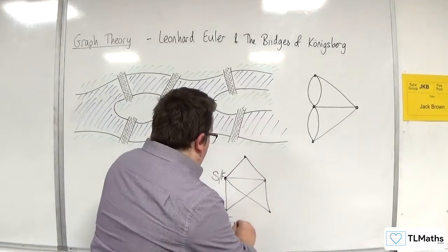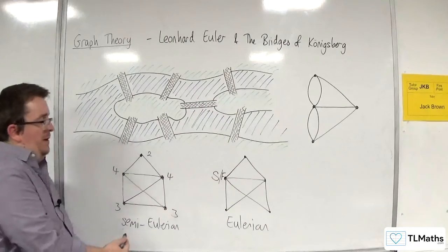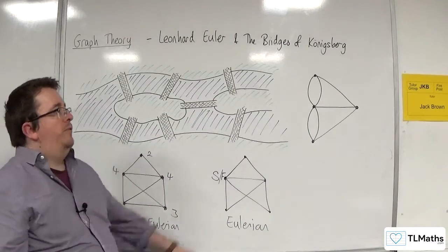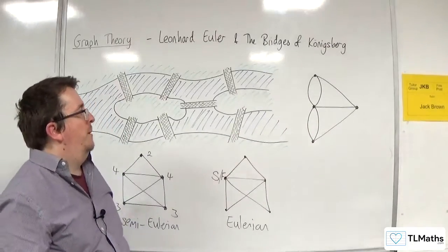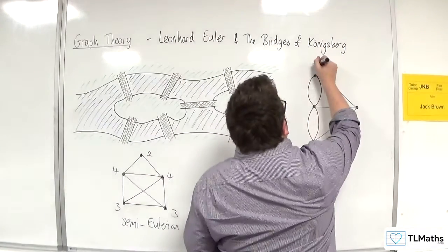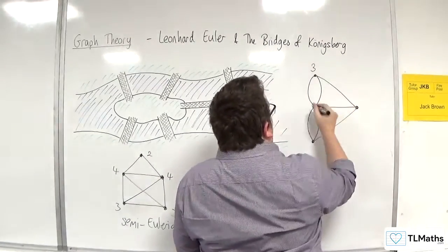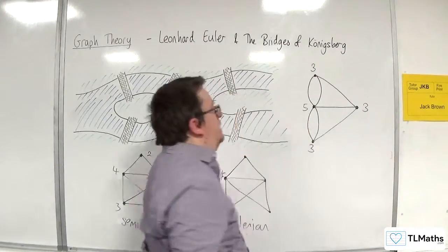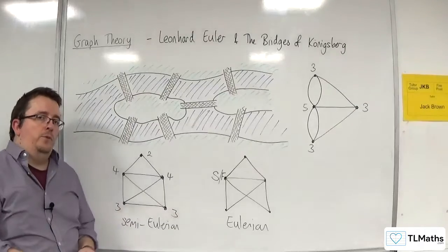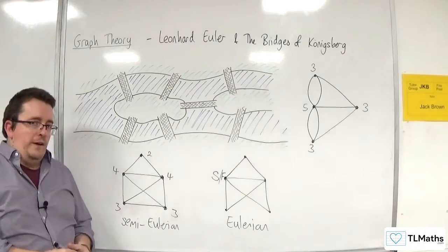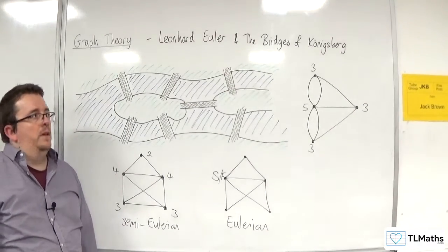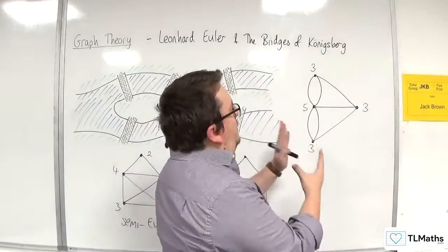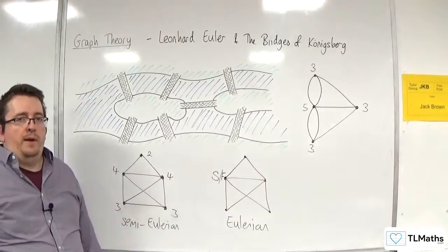So this is Eulerian. This is semi-Eulerian. So when you come to this graph, the Bridges of Königsberg problem, this has order three, this has order five, this has order three, and this has order three. So they all have odd order. It is not Eulerian. It is not semi-Eulerian. So that means that you cannot trace this out without lifting your pen off the page.